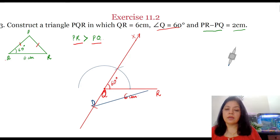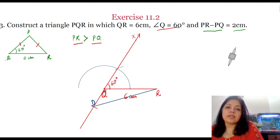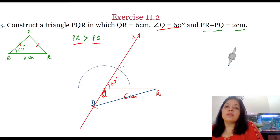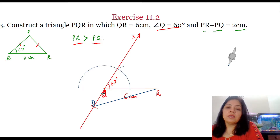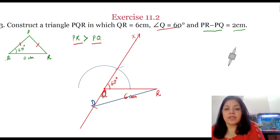Join DR. We know that the vertex P of the triangle PQR lies at any point on this ray QX. To find out that point, we will draw the perpendicular bisector of DR, and the point where this perpendicular bisector intersects the ray QX will be the point P of the triangle.